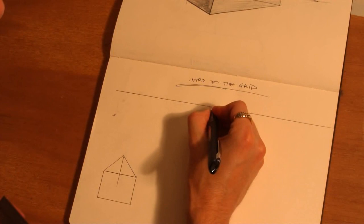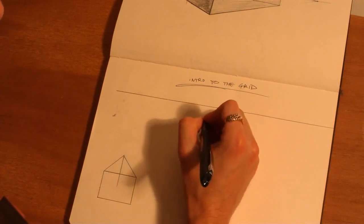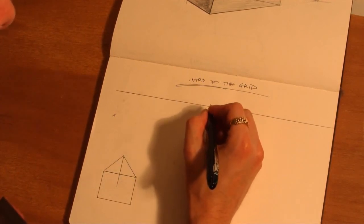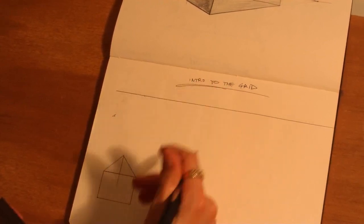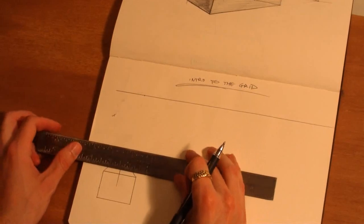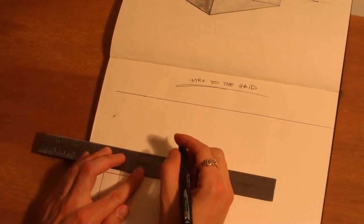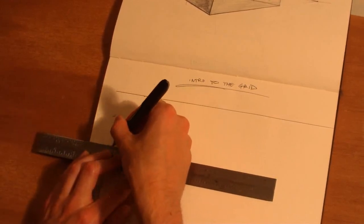This is the introduction to the grid. I think we're going to start with a miniature grid in one-point perspective, and then we're going to do a two-point perspective grid, probably using that same vanishing point.